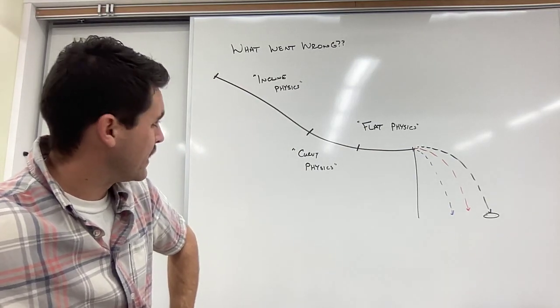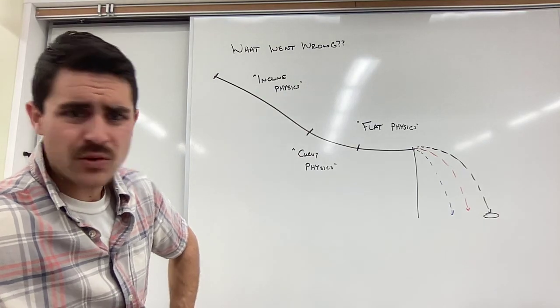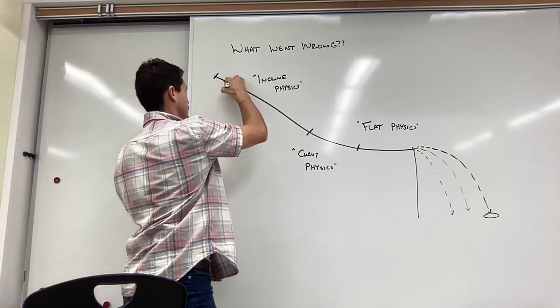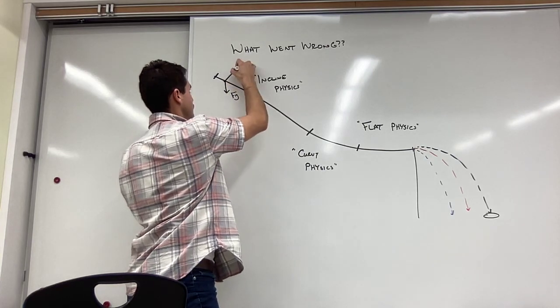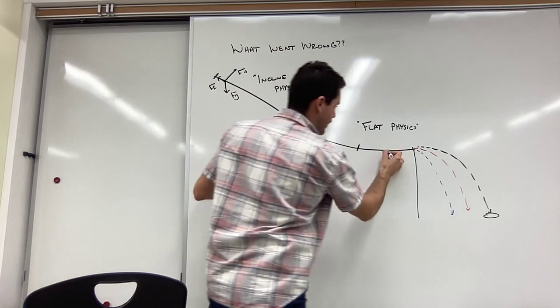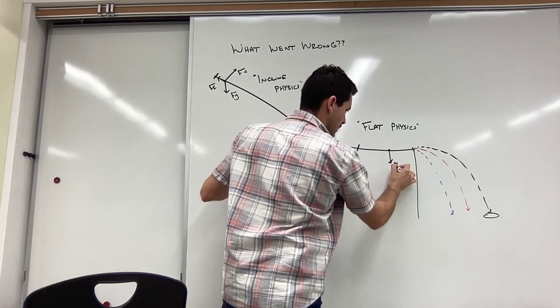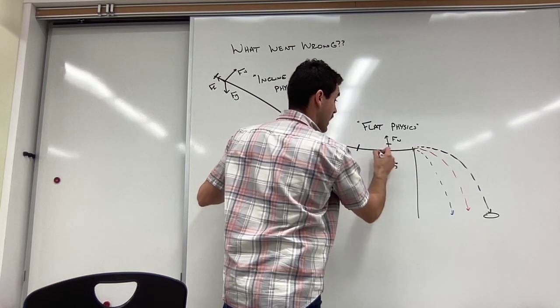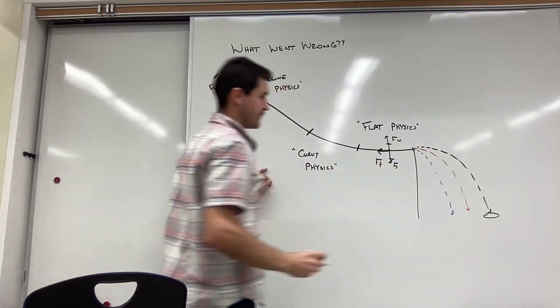So we thought about learning what's happening there. And so we have our FBDs. We have the FBD for the incline: force gravity, force normal, force friction. Down here, force gravity, force normal. Those are equal now in force of friction.